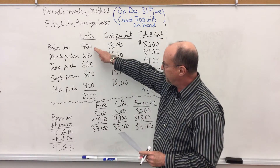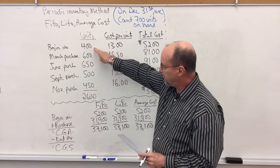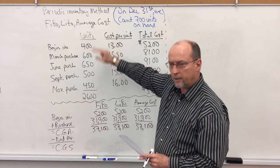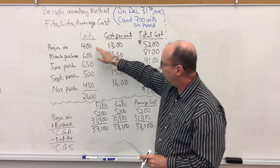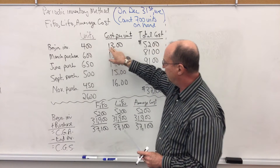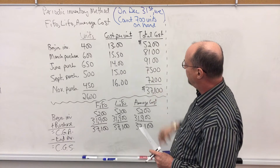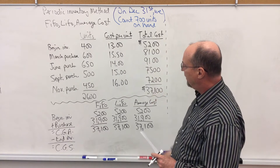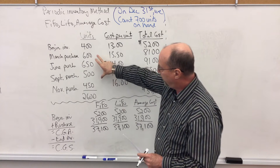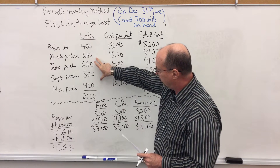Our beginning inventory at the beginning of this year — think January 1st — is 400 units at $13 a unit, for a total of $5,200. We made four purchases during the year.